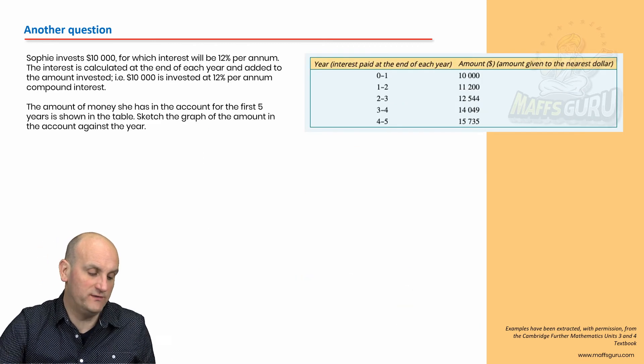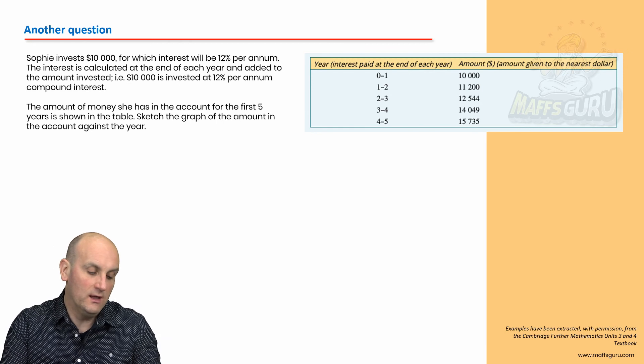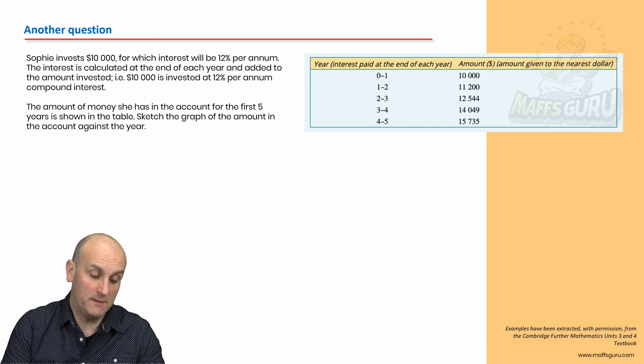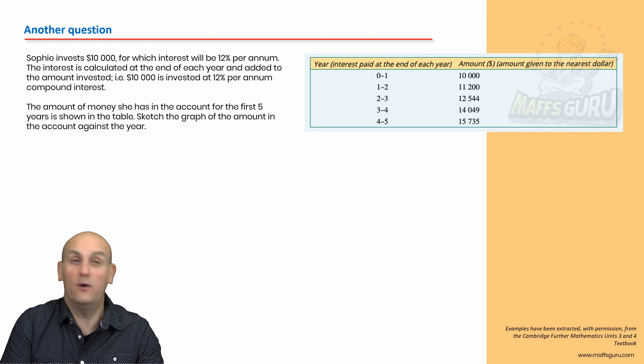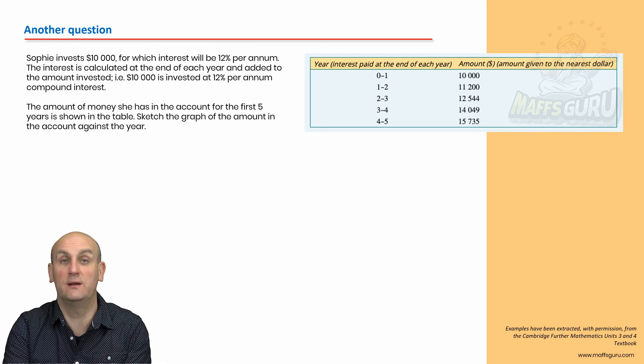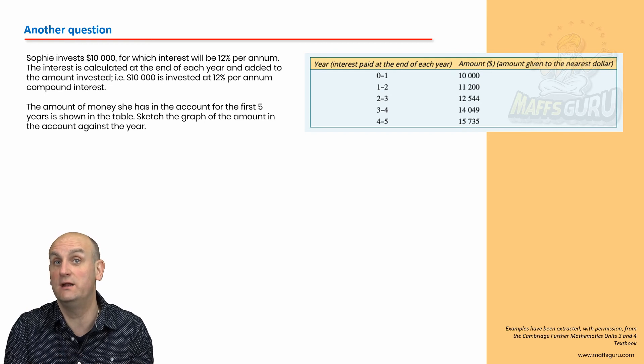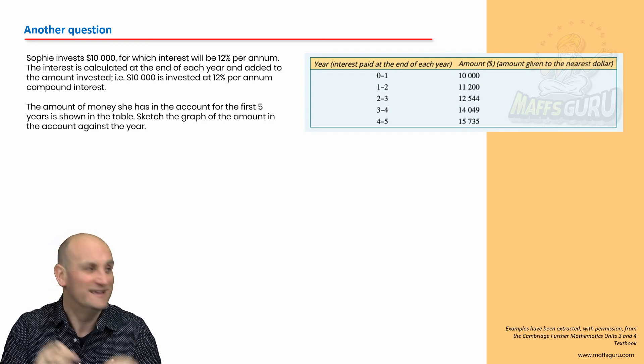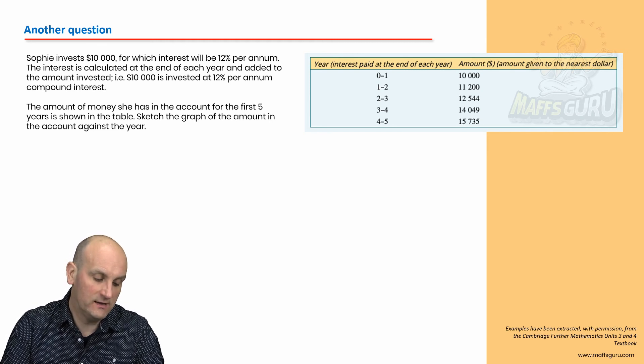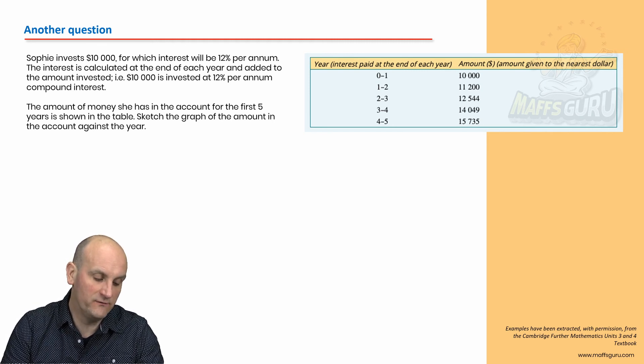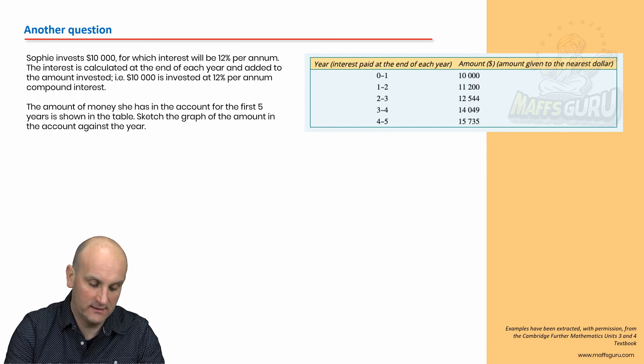All right. Here's another question. Sophie invests $10,000 for which interest will be 12% per annum. The interest is calculated at the end of each year and added to the amount invested. $10,000 is invested. Now, obviously, in this situation, if you needed to, you could actually bang that information into your calculator because you've already done the financial maths module. And if you haven't, get over there and do the financial maths module. It's awesome. The amount of money she has in the account for the first five years is shown. Sketch the graph of the amount in the account against the year.